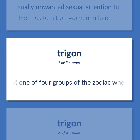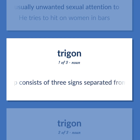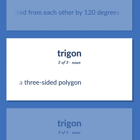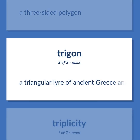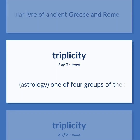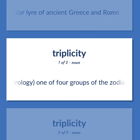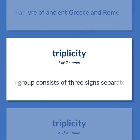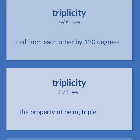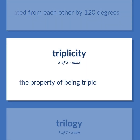Triangle: Astrology: One of four groups of the zodiac where each group consists of three signs separated from each other by 120 degrees. A three-sided polygon. A triangular lyre of ancient Greece and Rome. Triplicity: The property of being triple.